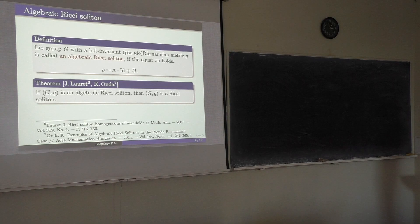Any algebraic Ricci soliton is a homogeneous Ricci soliton. But the converse is true only in the Riemannian case. In the pseudo-Riemannian case, there are examples which are homogeneous Ricci solitons but not algebraic Ricci solitons. We want to study non-trivial algebraic Ricci solitons on conformally flat metric Lie groups.